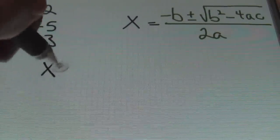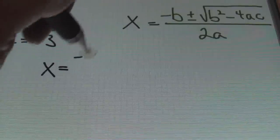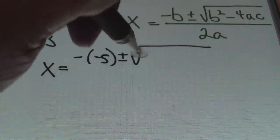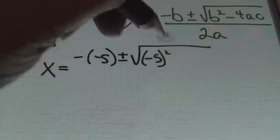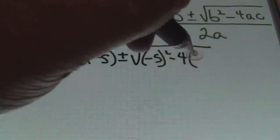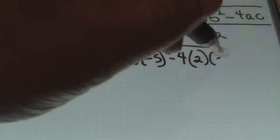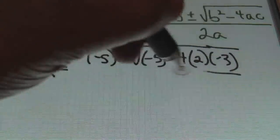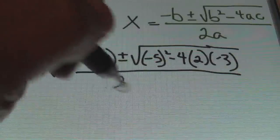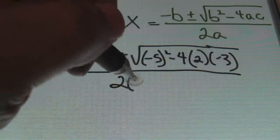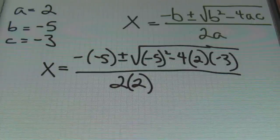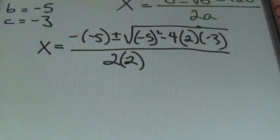Now that I have my three values, I'll go ahead and plug those in. So x equals to negative negative 5 plus or minus the square root of negative 5 squared minus 4 times 2 times negative 3, all over 2 times 2. After you plug in all your values, you need to simplify following the order of operations.